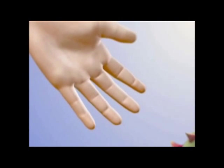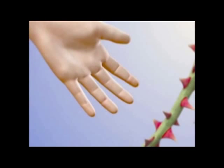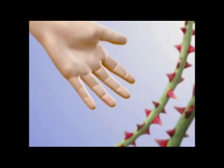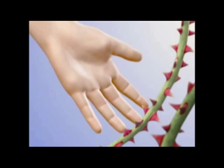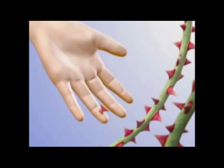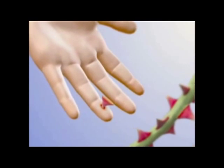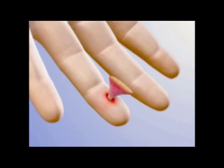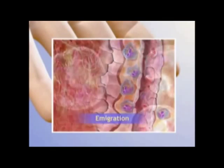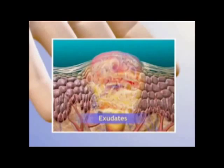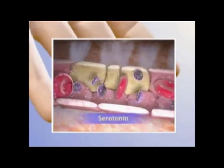Inflammation is the protective reaction of vascularized tissue to local injury. Acute inflammation is the early, almost immediate reaction of tissue to the injury, and it is the first phase of wound healing. Acute inflammation can be triggered by cell or tissue damage, or by the presence of dead cells or noxious agents such as bacteria. Acute inflammation typically occurs before the immune response becomes established and aims primarily at removing the injury-causing agent and limiting the extent of tissue damage.